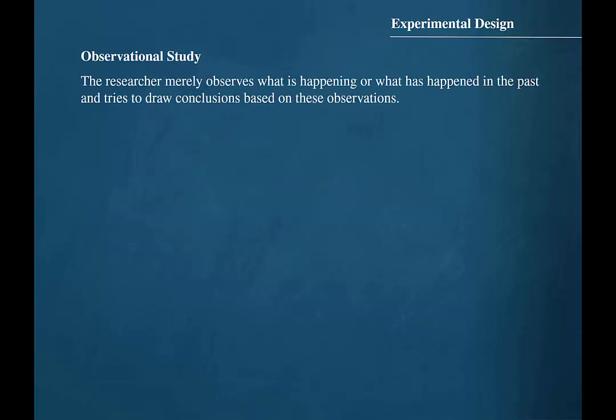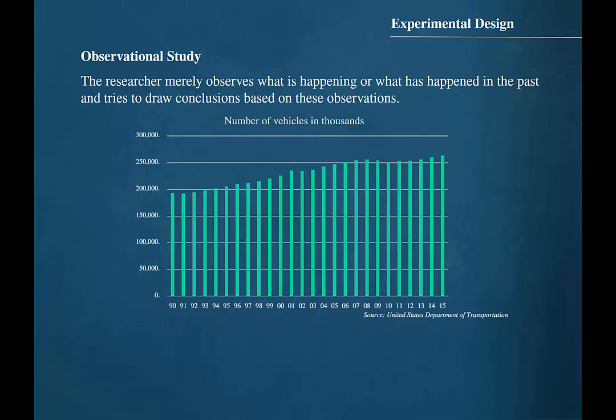In an observational study, the researcher merely observes what is happening or what has happened in the past and tries to draw conclusions based on these observations. For instance, if a researcher looks at the number of registered vehicles in the U.S. from the years 1990 through 2015, then the researcher is merely looking at a historical data set. There is no intervention by the researcher in the process of gathering and reporting this data.